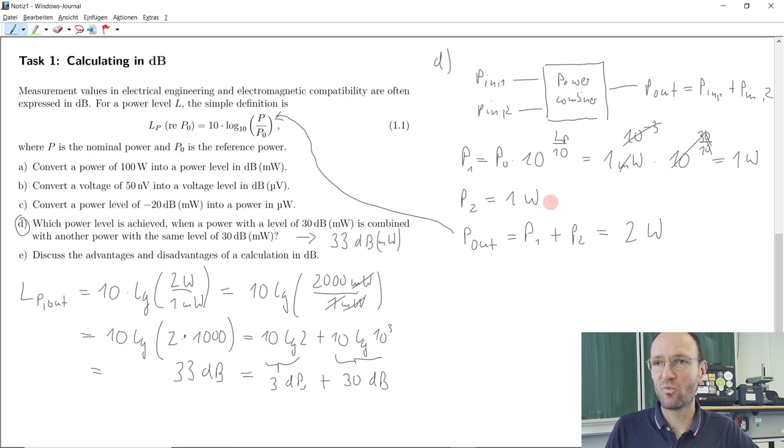And a much easier way or argument to calculate this result would be, if we have a power and combine it with the very same power, what do we do with the power? We double it. And doubling the power means we multiply it with a factor of 2, and a factor of 2 on a dB scale was 3 dB. So whatever we have, 30 plus 30 gives 33. If we would have 20 combined with 20, we'd get 23 if we have 10.